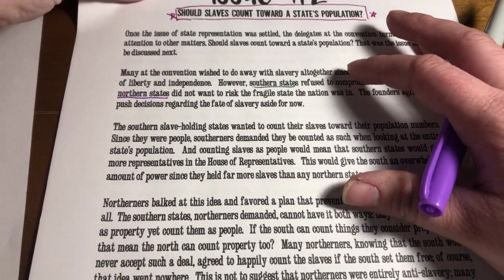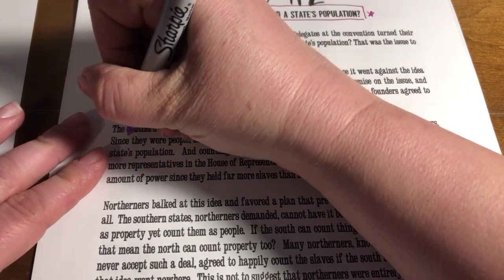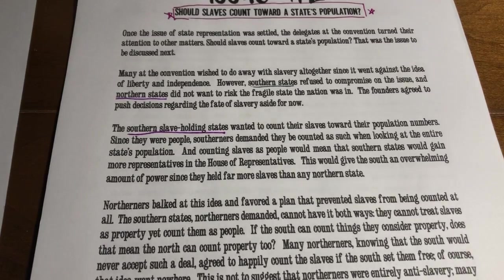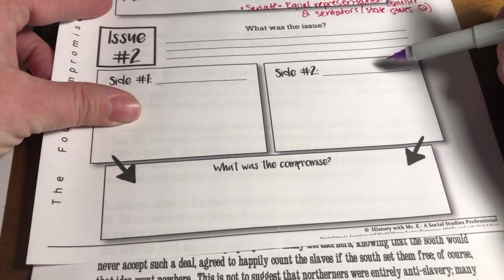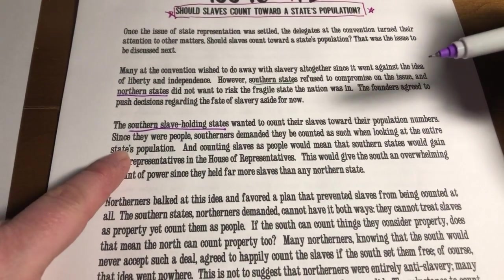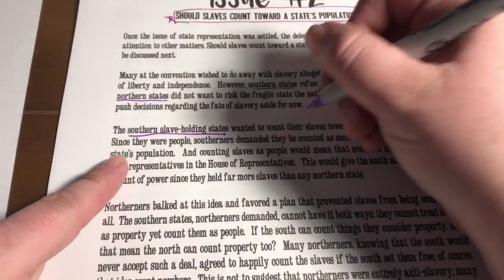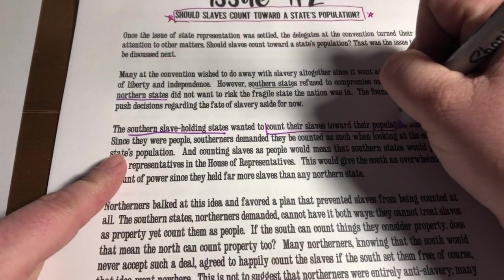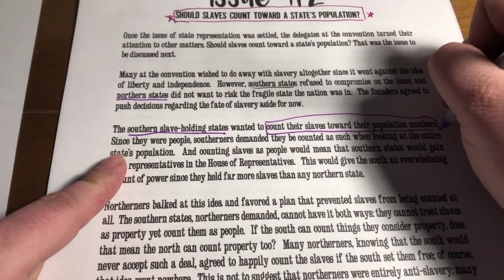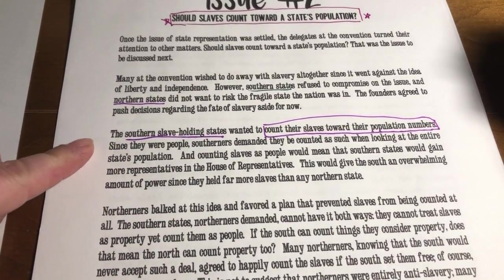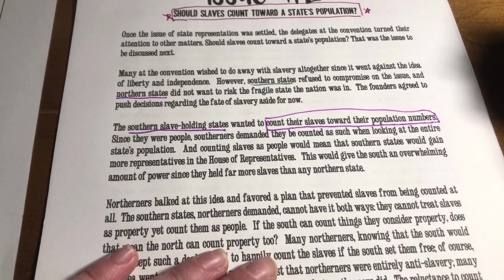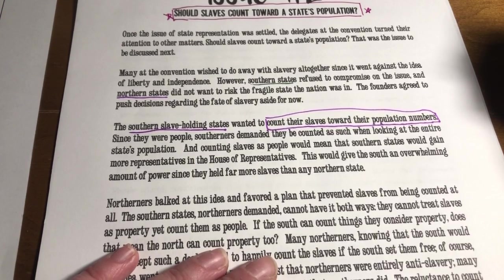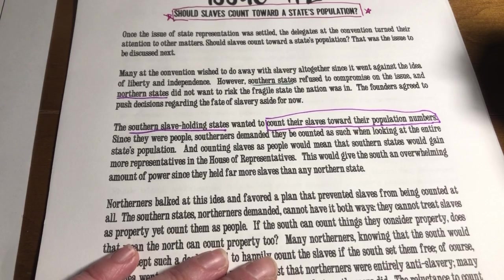Here are our two sides. Side number one: the southern slaveholding states. On your graphic organizer, write 'Southern States' on one side and 'Northern States' on the other. The southern slaveholding states wanted to count their slaves towards their population numbers — they said all slaves should count. Since they were people, southerners demanded they count when looking at the entire state's population, and counting slaves as people would mean southern states would gain more representatives in the House of Representatives.